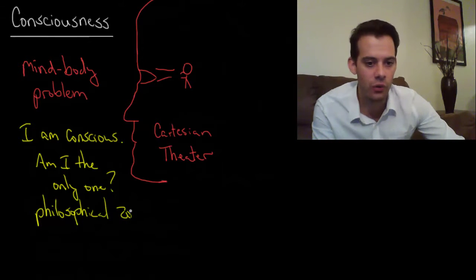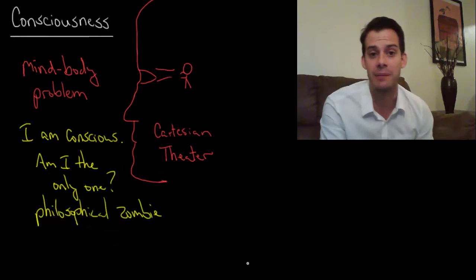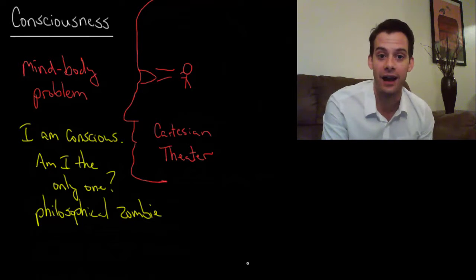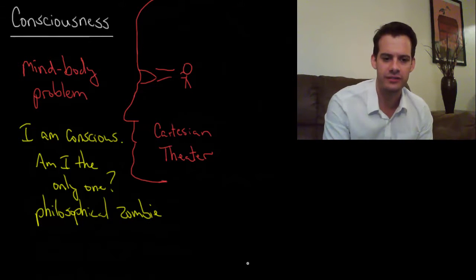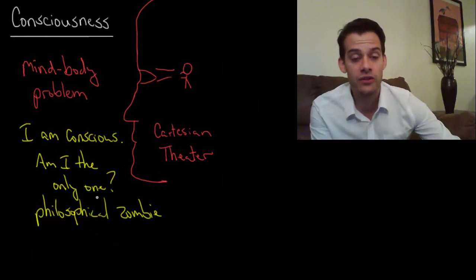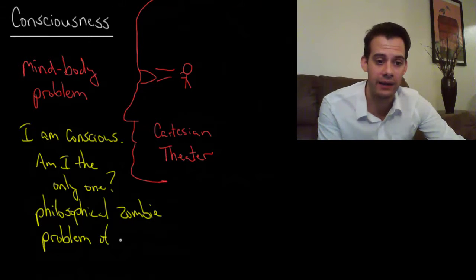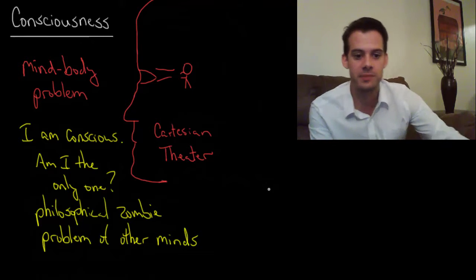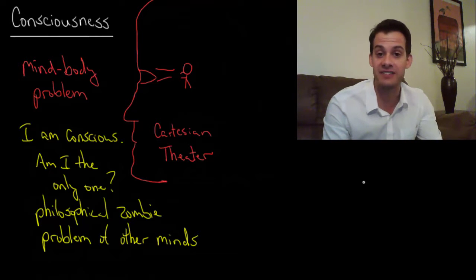So this would be a person who does all the behaviors that we would expect a person to do and they can talk and describe their thoughts, but they actually don't have any internal mental experience. They're a zombie. There's nothing going on upstairs, so to speak. How do we know that everybody else around us is not a philosophical zombie? And this is known as the problem of other minds because we can't know because we only have our own mind. So we can't really be sure that other people have internal mental experience. And it's not just people that we think about this for. We can apply this to animals as well.